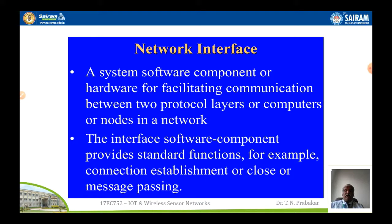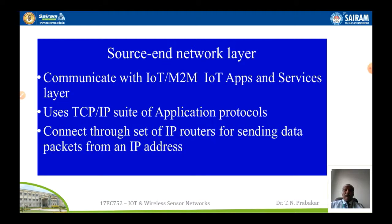A network interface is a system software component or hardware for facilitating communication between two protocol layers or computers. It is a hardware interface that facilitates the connection between two protocol layers or two computers, and the interface software component provides standard functions. It is not only hardware — it is also part of the software for transmitting data from one system to another. The source and network layer communicate with the IoT system, using the TCP/IP suite of application protocols, with data routed through a set of IP routers until it is received at the destination IP address.